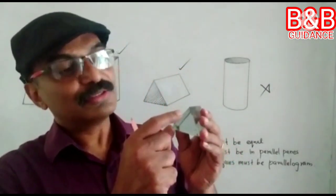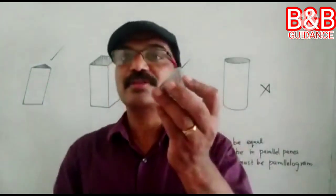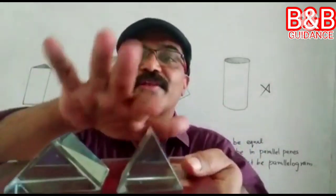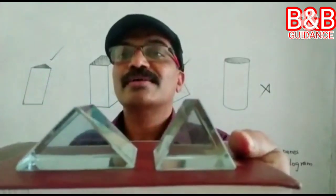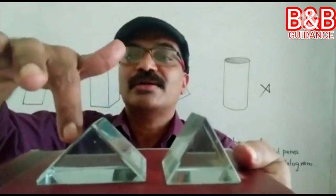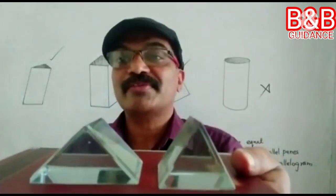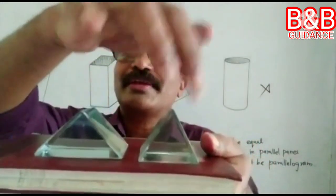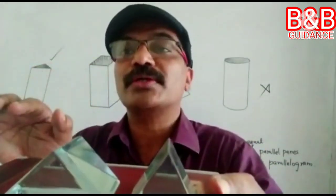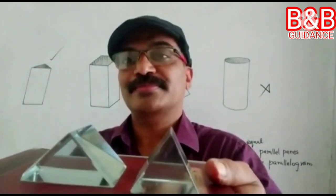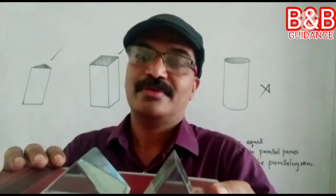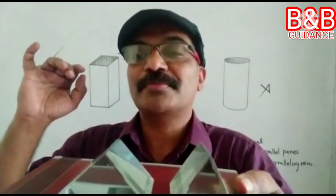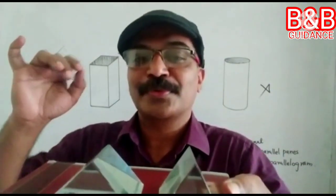We can think about different triangular prisms. For example, what is the difference between these two? Here, the angle between the refracting surfaces — you can guess the angle — is 60 degrees. In this other case, the angle between the refracting surfaces is 90 degrees. This angle between the refracting surfaces is called the angle of prism.